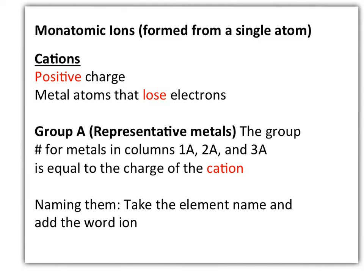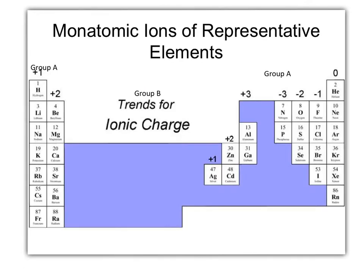Once we have the charge, we can write the chemical formula, and to name the chemical formula, we will take the element name and add the word ion to it. By looking at this periodic table, we will identify columns 1A, 2A, and 3A. Notice that the charge of each of the columns is identical to the number next to the letter A.